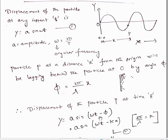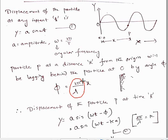So the displacement of particle P at time t is given by y = a sin(ωt - φ). This minus φ appears because the particle at point P is lagging behind the particle at O by phase difference φ. Now, 2π/λ is called the wave vector k, so φ = k·x and k = 2π/λ.